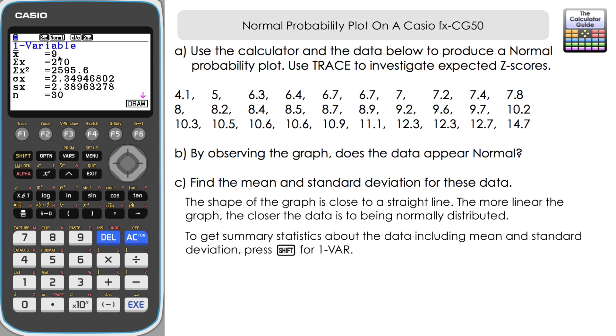So the mean equals nine and then we can either choose Sigma X or SX depending on if we've got a sample. Let's choose Sigma X 2.349 is going to be the standard deviation.